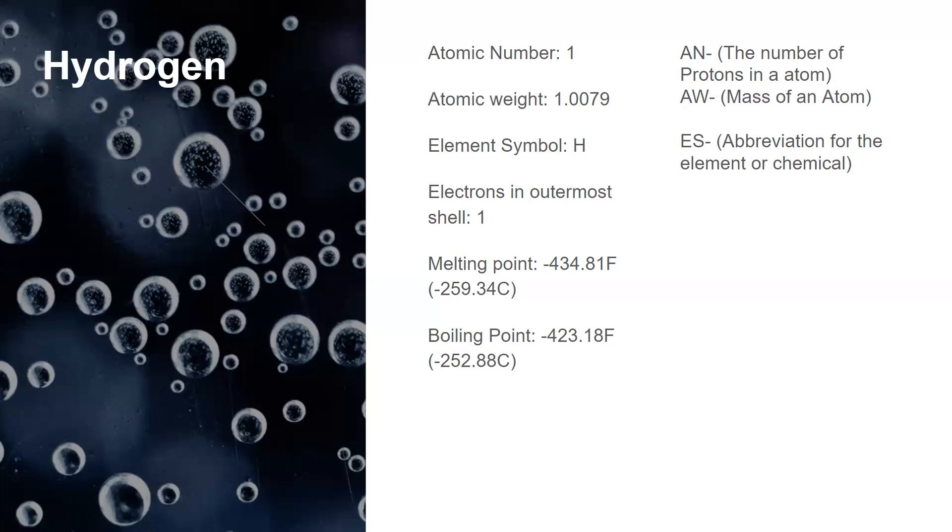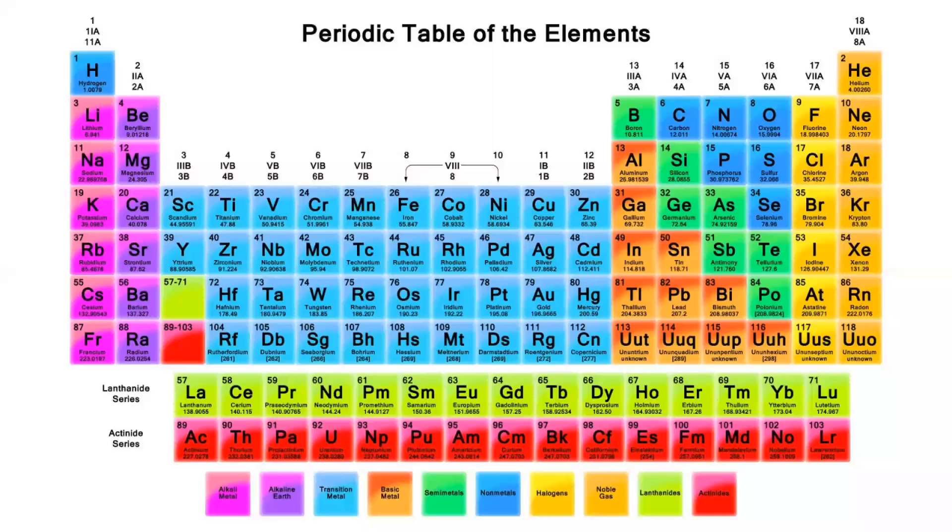Now let's look at the periodic table. Okay, so I got this from the internet. I got this periodic table. So, as you see, here is hydrogen, number one, and helium, number two.